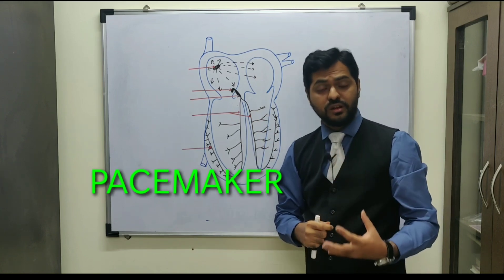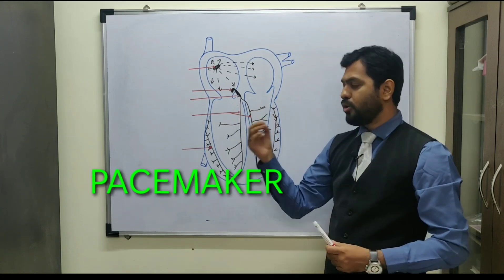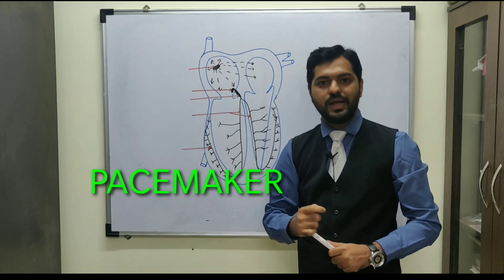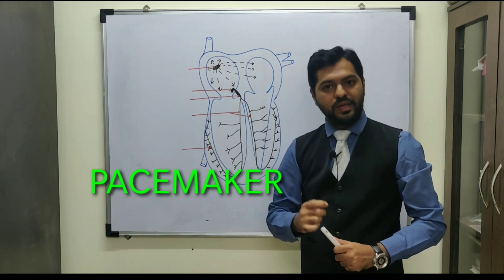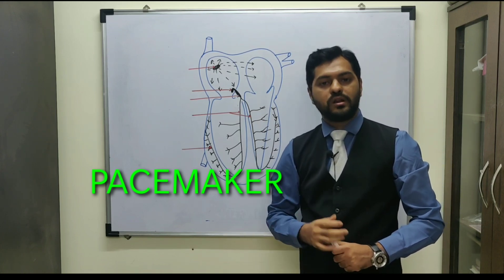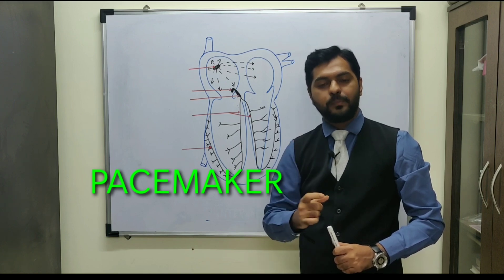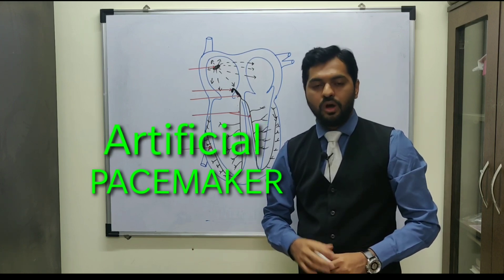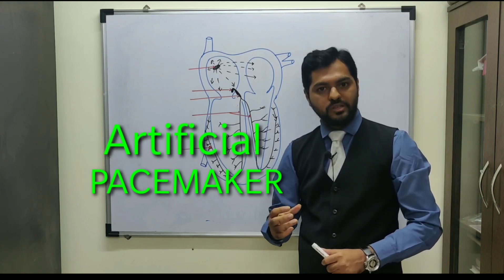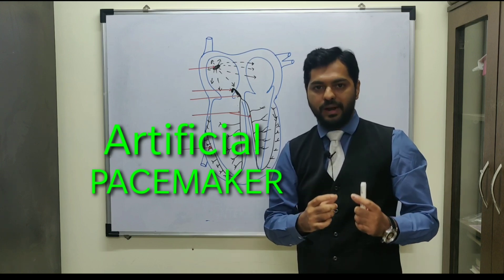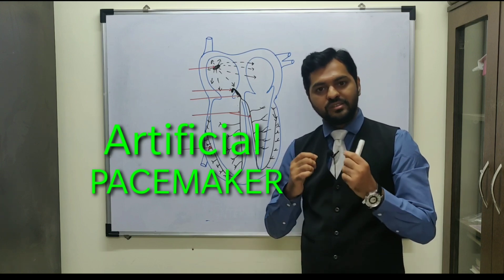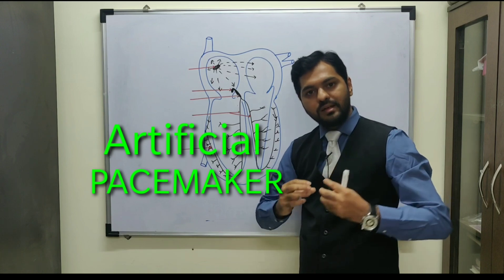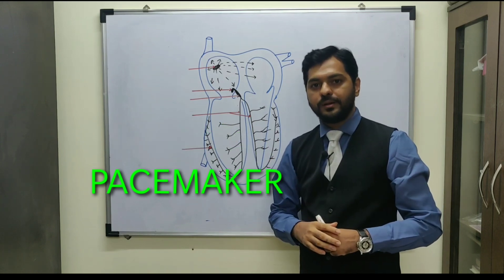There are certain children in which the SA node - this neuromuscular tissue - could be defective or damaged. Those children require a surgical replacement with an artificial pacemaker. That artificial pacemaker is usually made from a nickel-cadmium battery whose wires are connected to the SA node so that the impulse is generated.